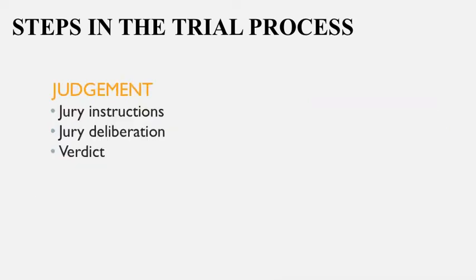Important to note that about 90% of cases don't actually make it to the trial process — most cases don't get to that courtroom. Step six is the judgment, where the jury is provided instructions about how to decide the case and which laws to base their decision on. The jury then deliberates — which could take minutes, hours, or days depending on the trial — and ultimately a verdict is delivered.